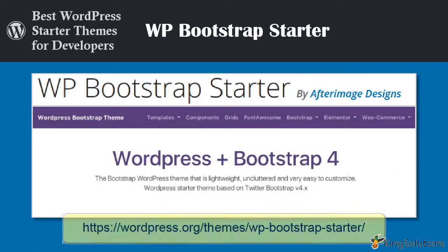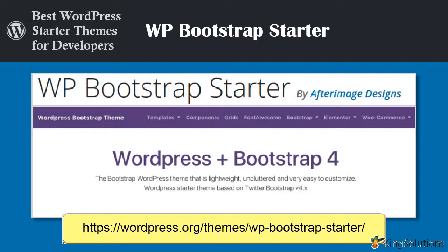WP Bootstrap Starter is a WordPress starter theme based on Automattic's Underscores and Twitter Bootstrap — the most popular HTML, CSS, and JS framework for developing responsive, mobile projects on the web. WP Bootstrap Starter also includes Font Awesome, a full suite of over 675 pictographic icons for easy, scalable vector graphics on websites. Page templates include left and right sidebar, full width, blank with and without container page, and a widgetized footer area. This starter theme is also compatible with WooCommerce, Elementor Page Builder, Contact Form 7, and Visual Composer. Using these WordPress plugins, you can extend the functionality of your site without needing to code.